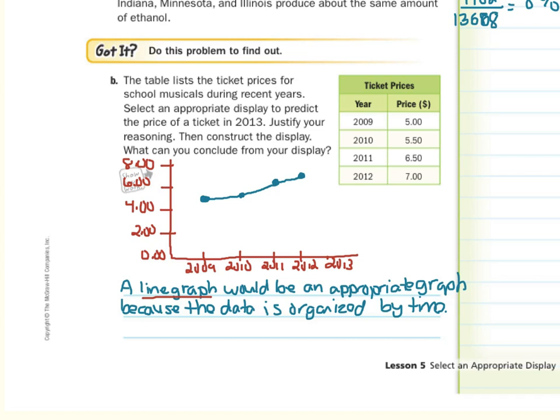And as we label this, this axis was our price in dollars, and this axis were our years. We should put a nice title here, such as Musical Ticket Prices.